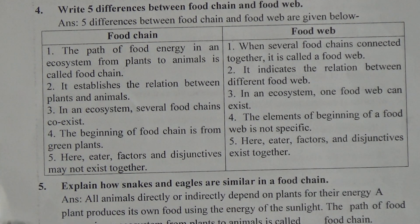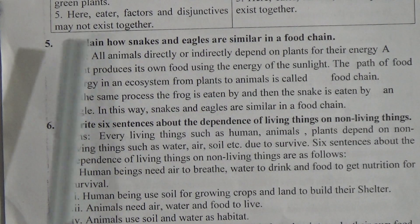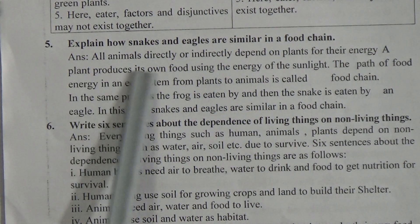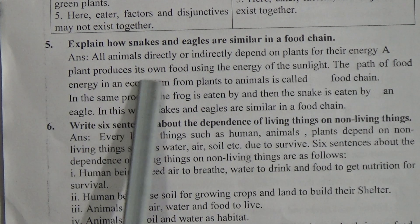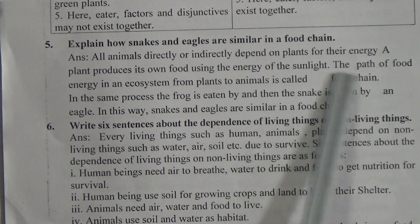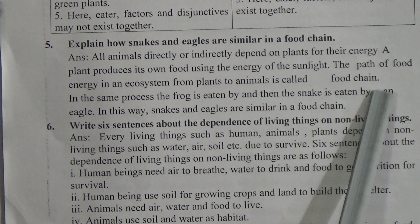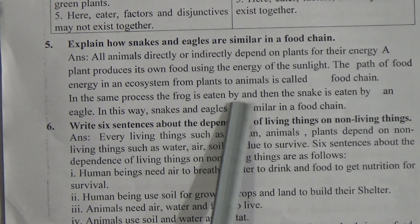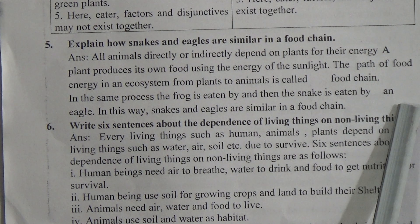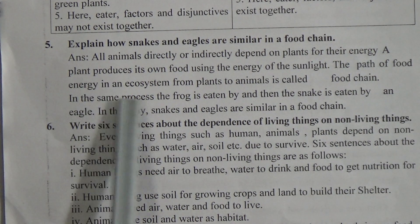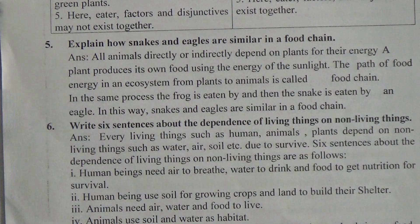CBQ number 5: Explain how snakes and eagles are similar in a food chain. All animals directly or indirectly depend on plants for their energy. A plant produces its own food using the energy of sunlight. The path of food energy in an ecosystem from plants to animals is called a food chain. In this process, the frog is eaten by the snake, and then the snake is eaten by an eagle. In this way, snakes and eagles are similar in a food chain.